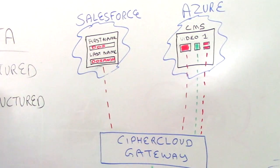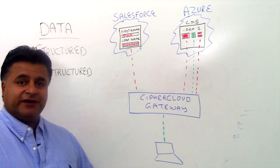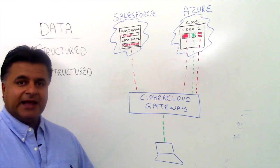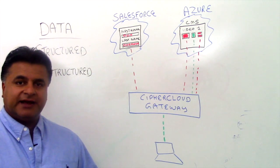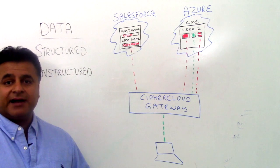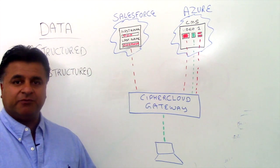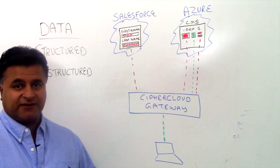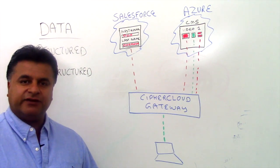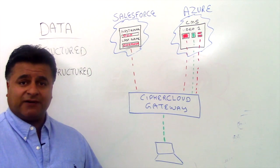That is what we reference as structured data. In addition to structured data, we also support unstructured data. When we talk about unstructured data in the Cypher Cloud context, we talk about files. They could be any type of files — rich media files such as graphic files, documents, PDF, Excel spreadsheets, and also video files.